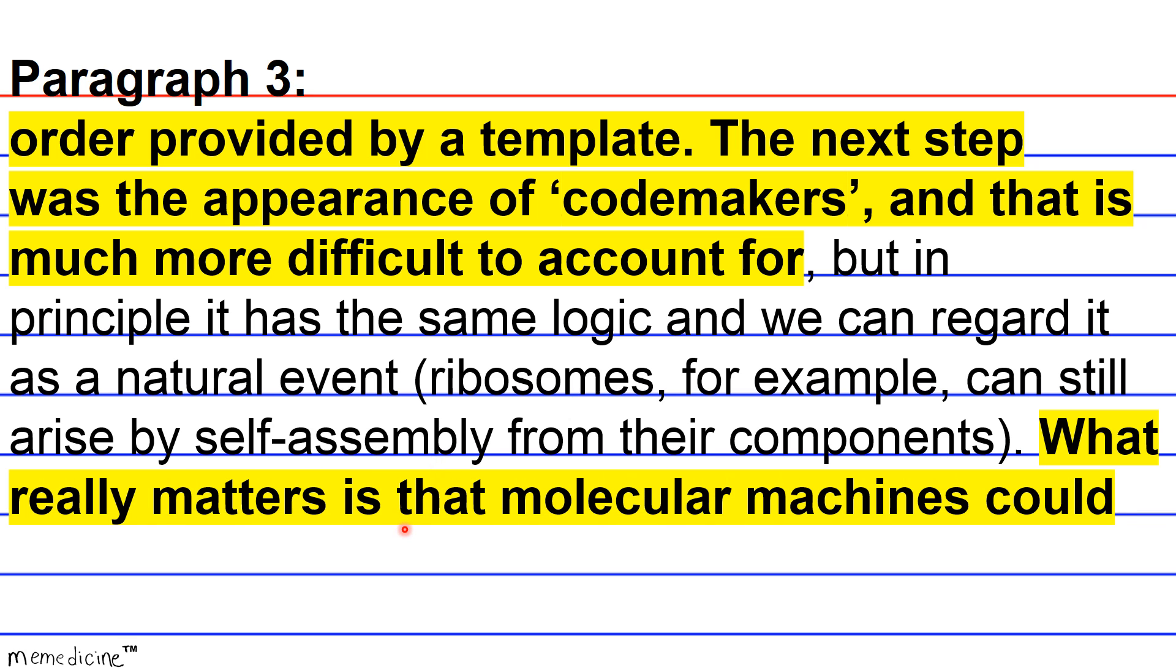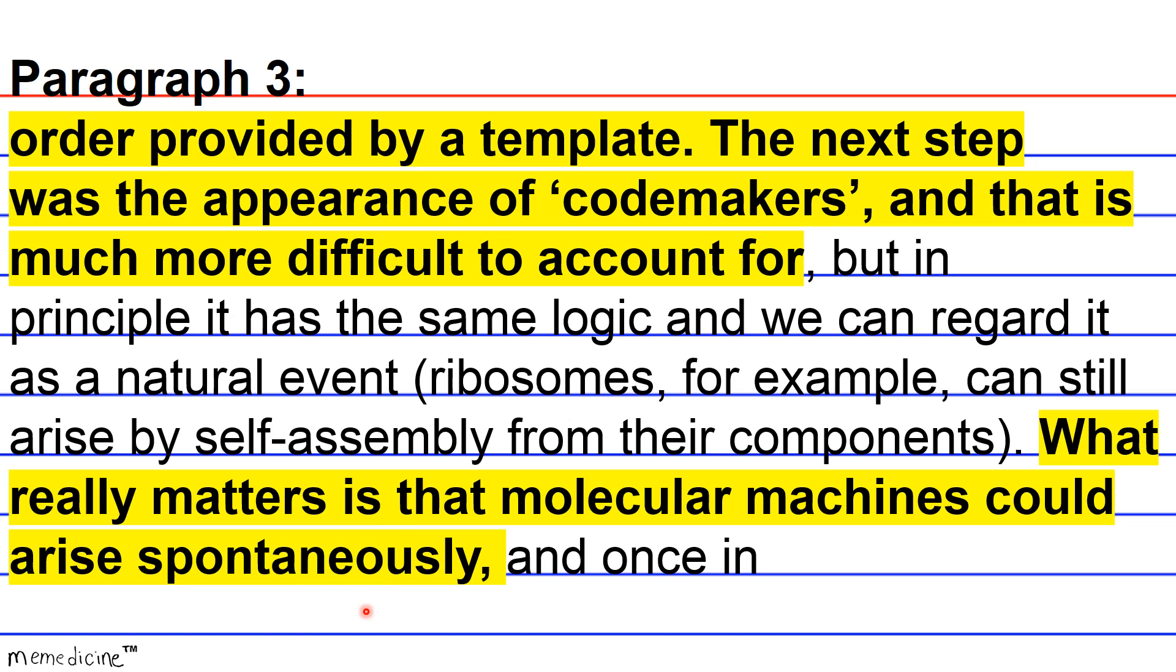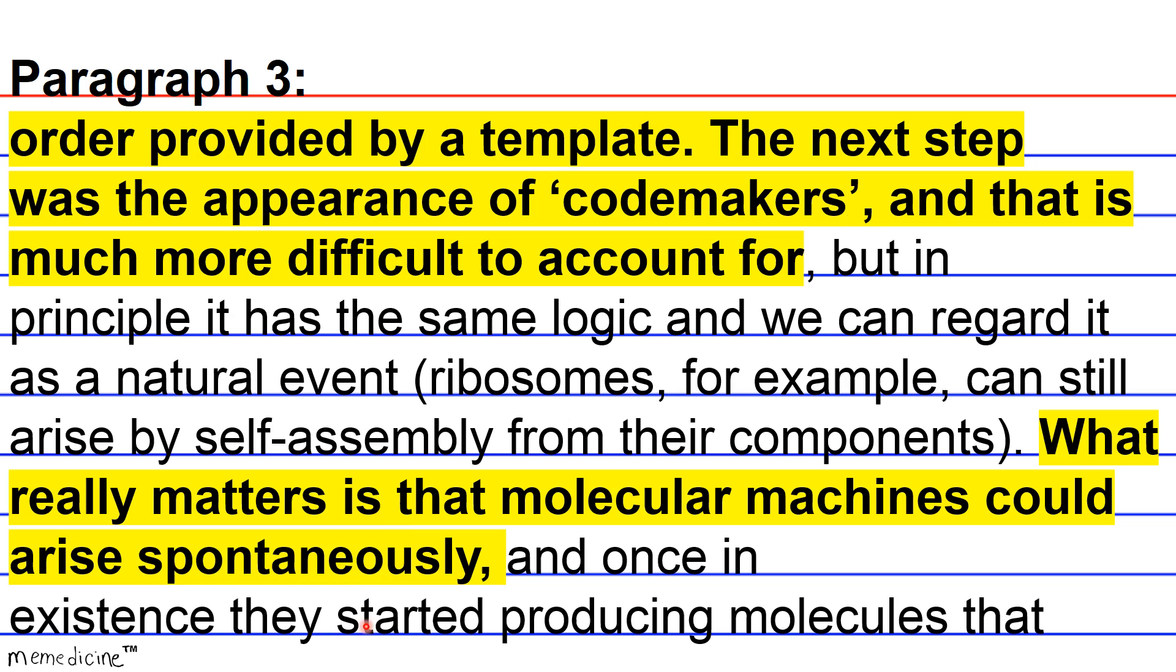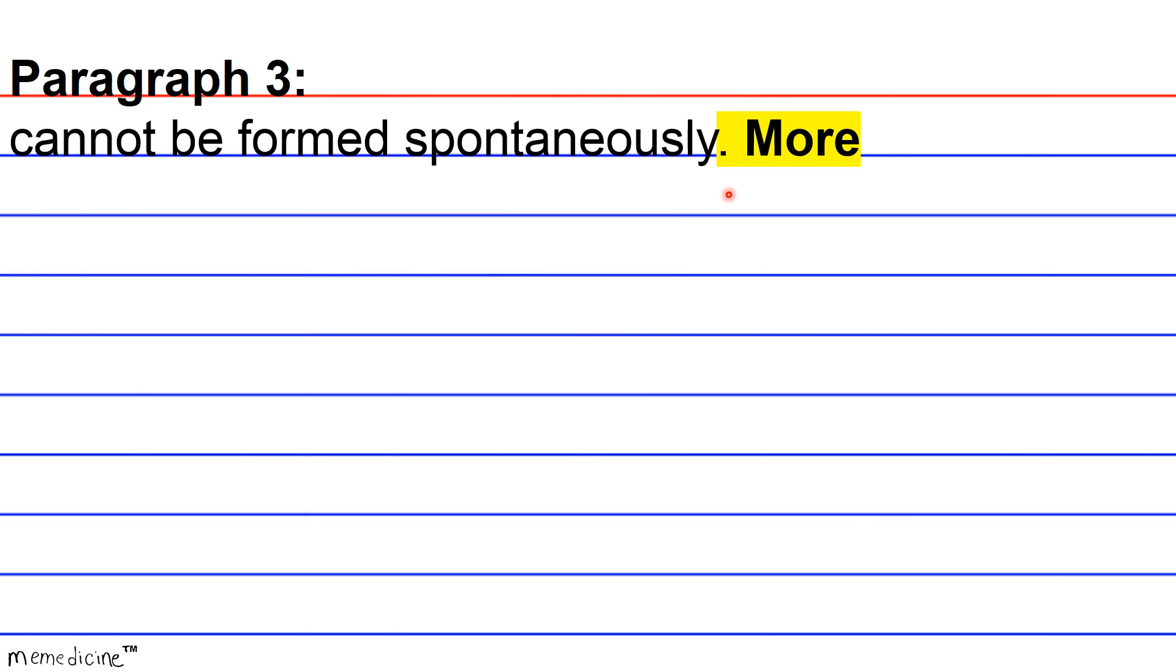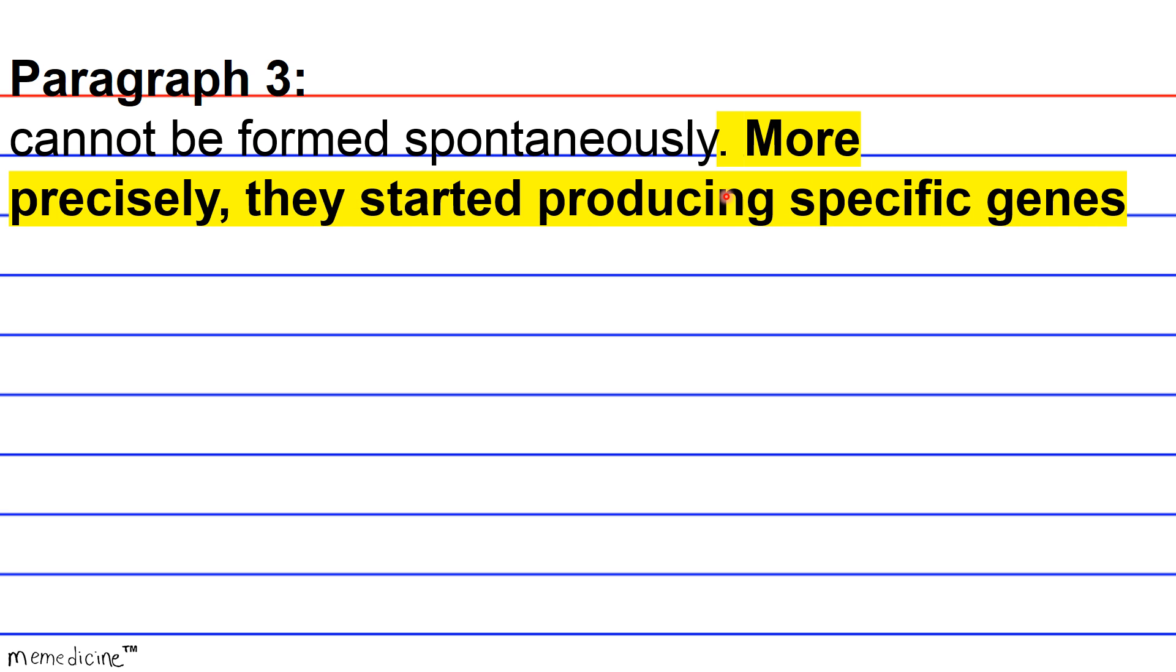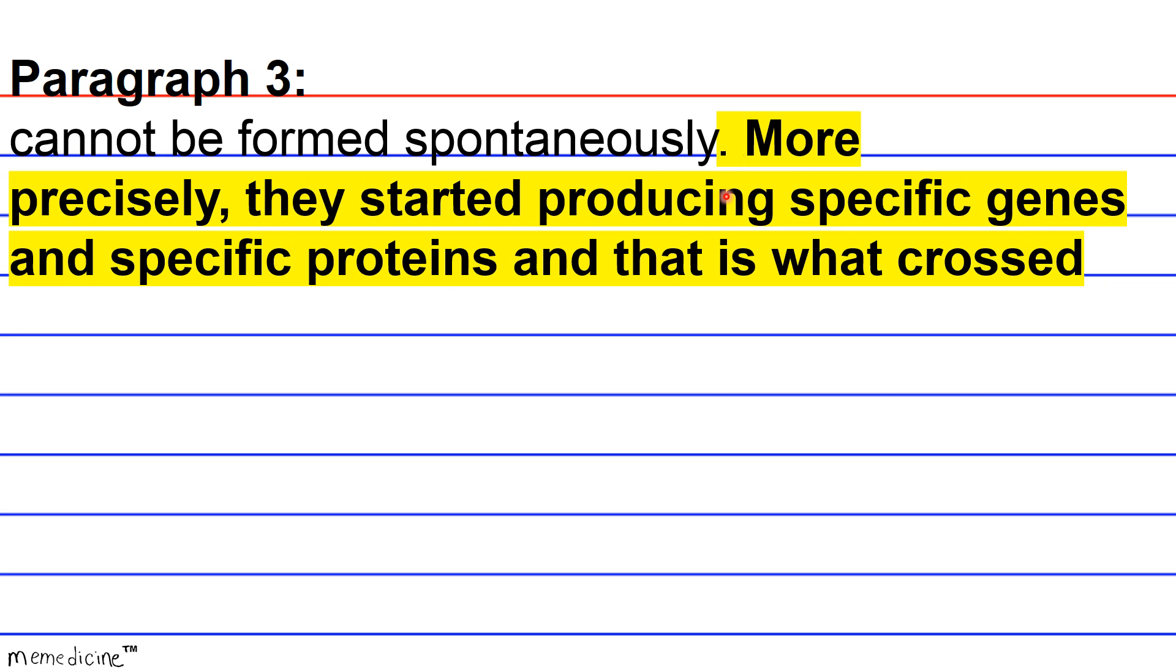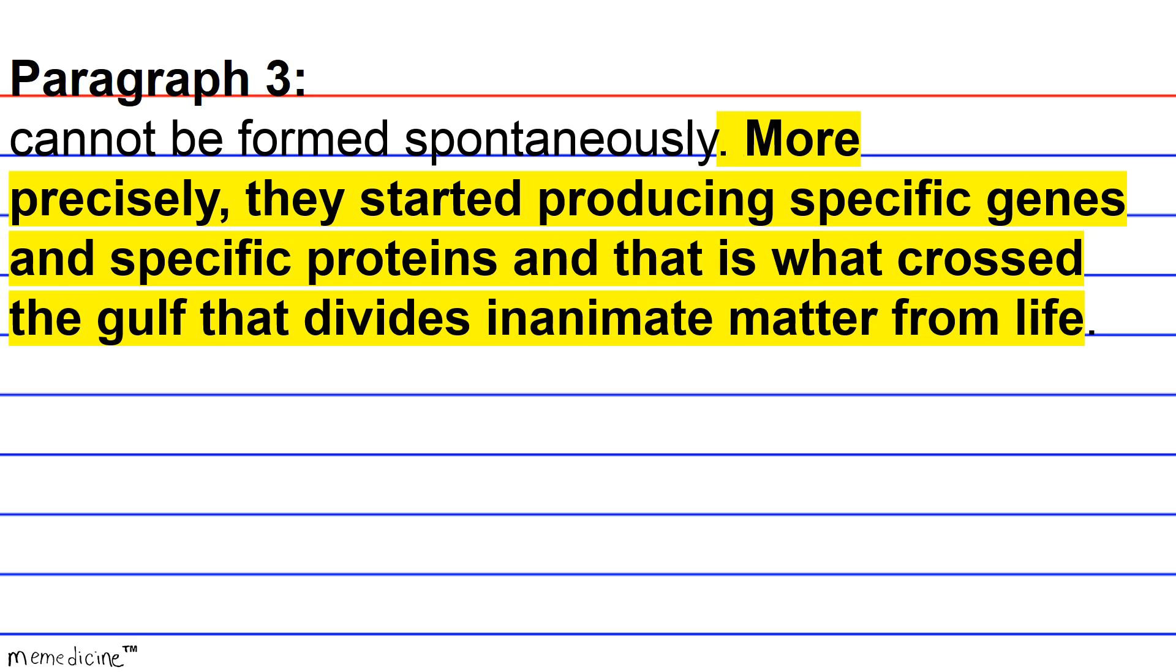What really matters is that molecular machines could arise spontaneously, and once in existence, they started producing molecules that cannot be formed spontaneously. More precisely, they started producing specific genes and specific proteins, and that is what crossed the gulf that divides inanimate matter from life.